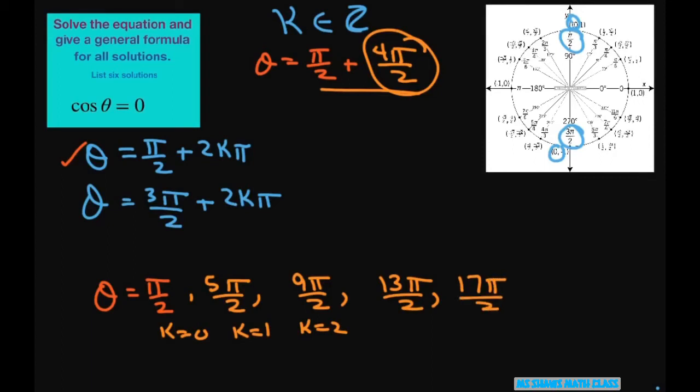We could also subtract. And that would give you negative 3π/2, because that would be where k is negative 1. And then you can keep subtracting 4π. So the next one would be negative 7π/2.